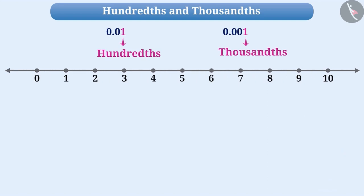Look here. Numbers from 0 to 10 are represented on this number line. If we zoom in on the number line, then we can divide the distance between 0 and 1 into 10 equal parts.